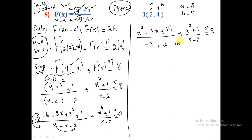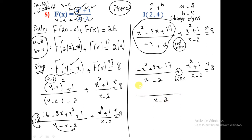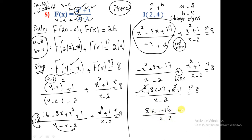Changing the sign of the first fraction: (-x² + 8x - 17)/(x-2) + (x²+1)/(x-2) = 8. Denominators are now like. Adding numerators: (-x² + x²) cancels; we have 8x - 17 + 1 = 8x - 16, over (x-2).